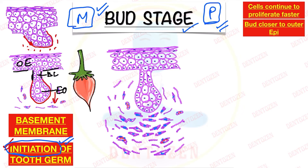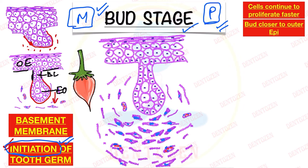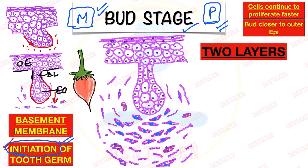Now let's see what layers are present inside this enamel organ — that is your very very important viva question. So how many layers are there? There are two layers in this enamel organ in the bud stage.